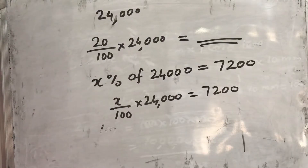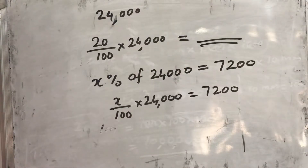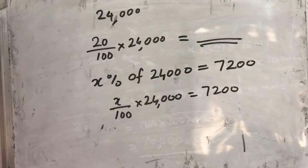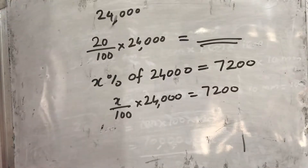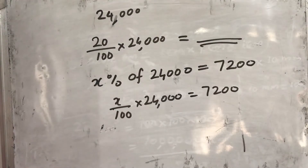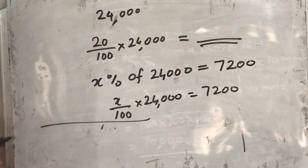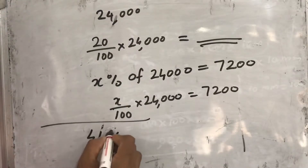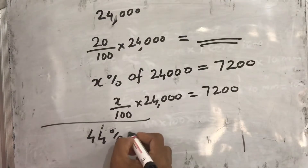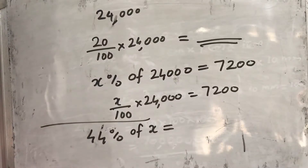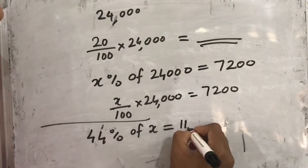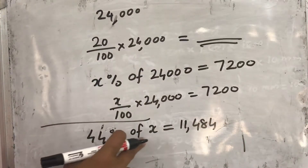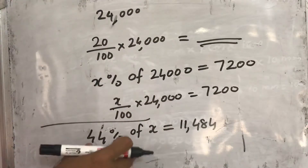Next question: Ramesh and Sadish contested the election in the Panjshat committee from their village. Ramesh scored 11,484 votes, which was 44% of the total votes. Sadish scored 26% of the votes. Calculate the total number of votes cast in the village. It is given that 44% of the total votes equals 11,484.